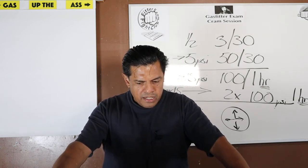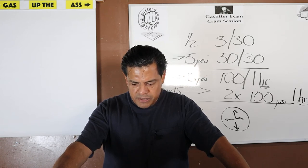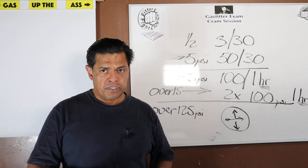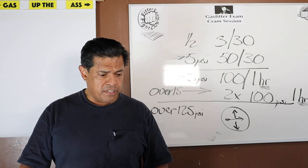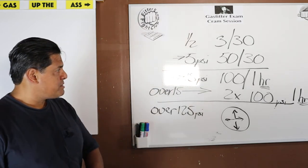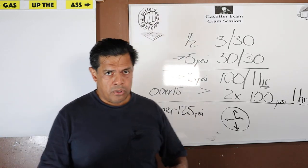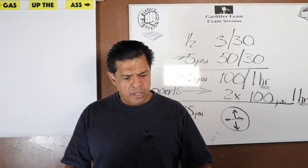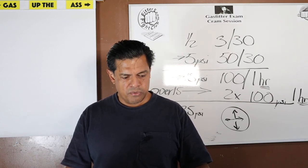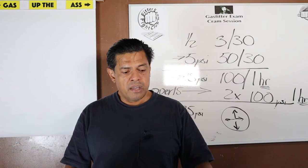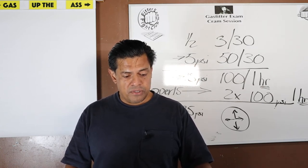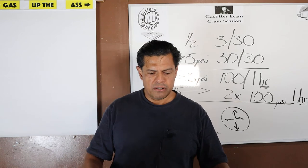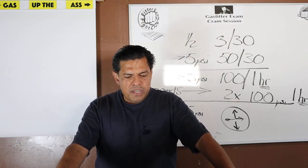We've now covered the test pressure table, which is a big table, just like we covered the purging table at the beginning. Now let's go back to test one, question four: digital gauges used for gas tests shall have a minimum reading of one one-hundredth of a psi.